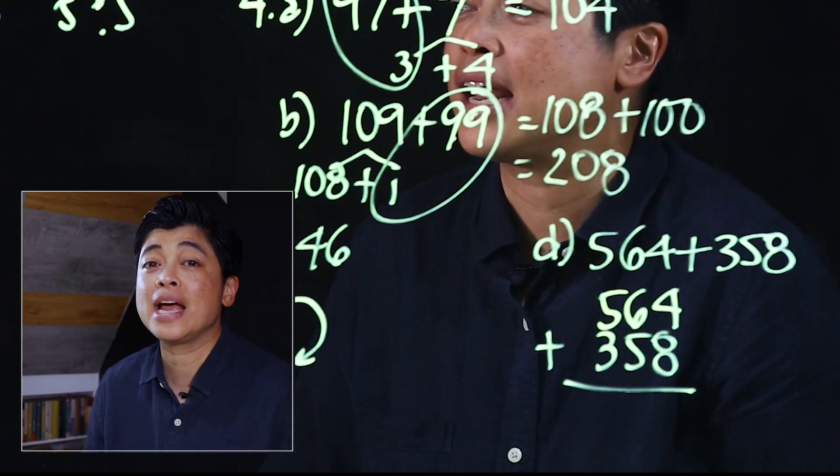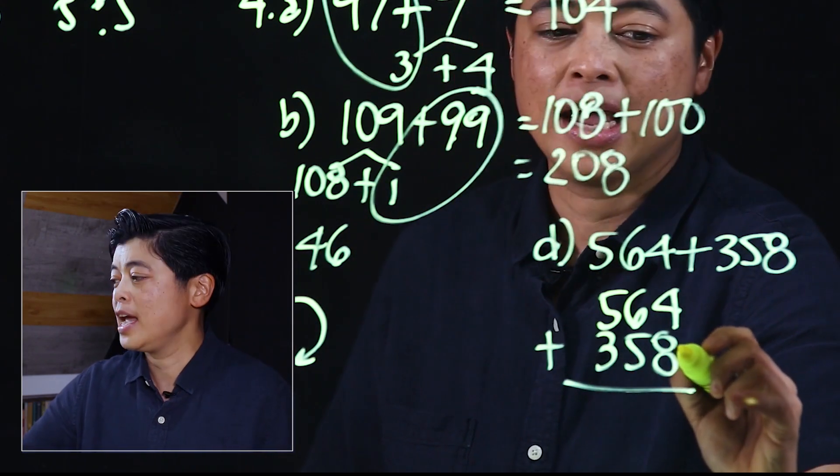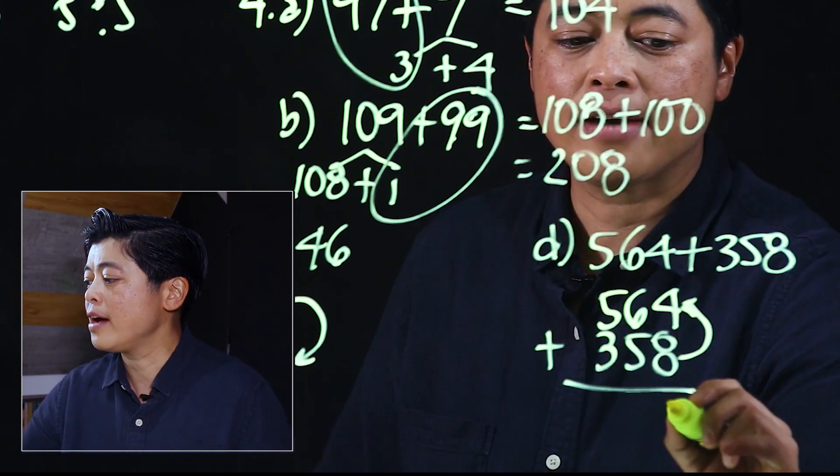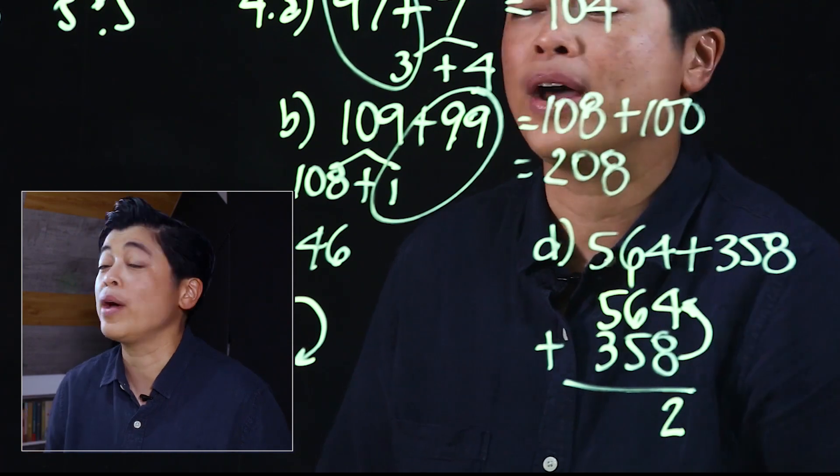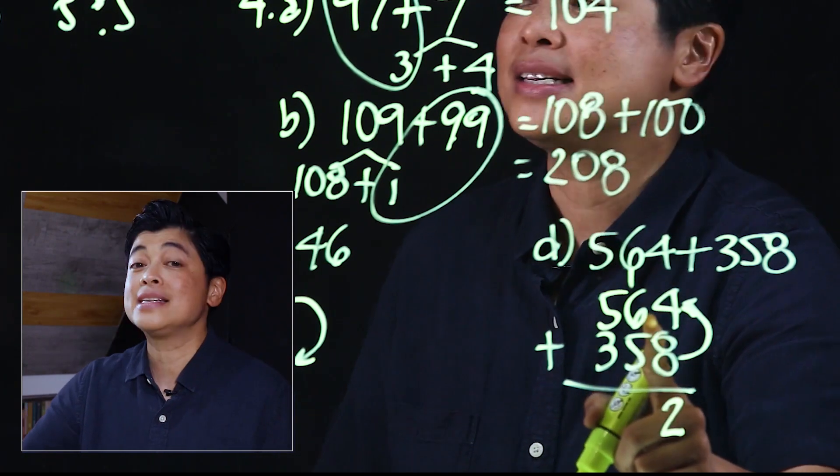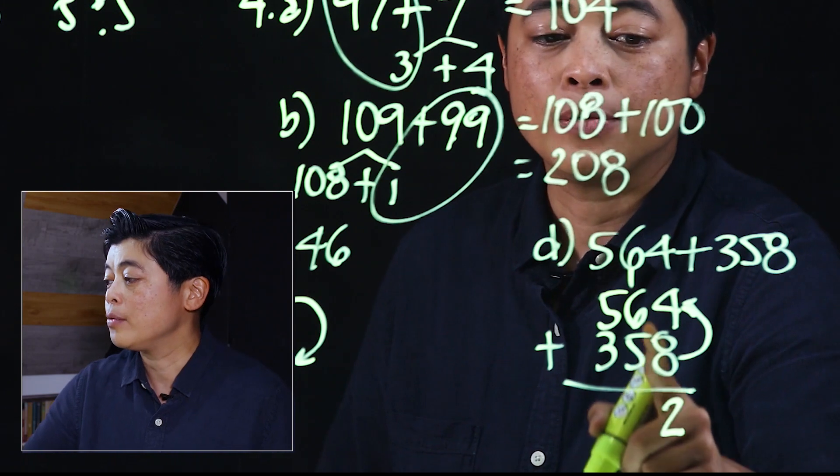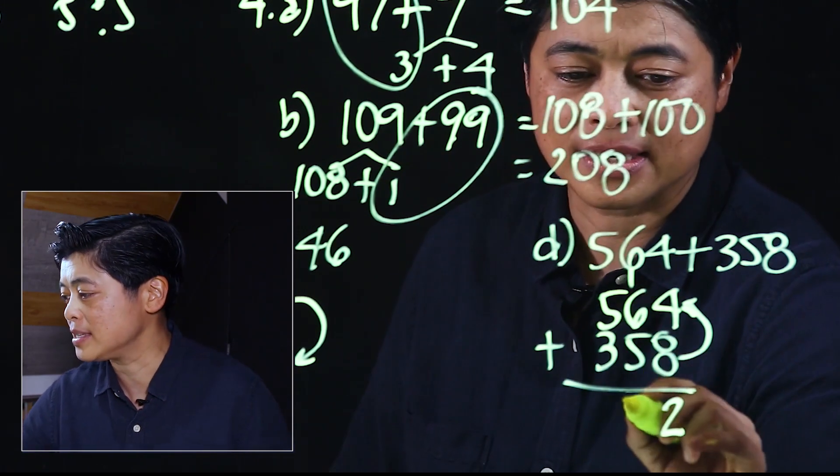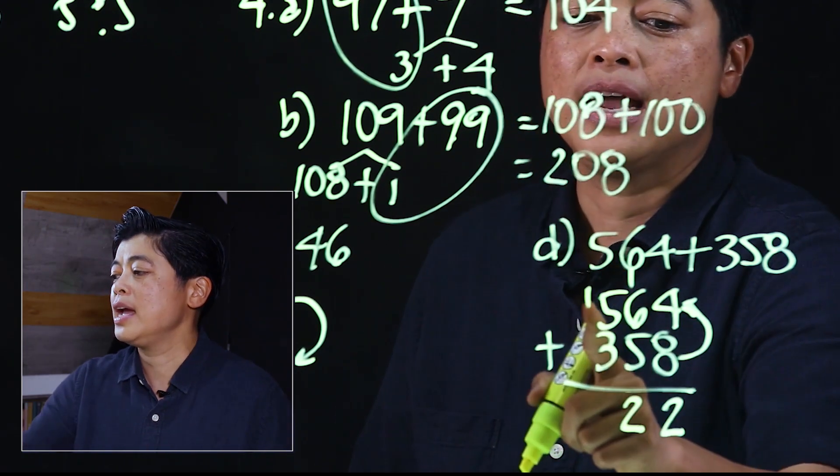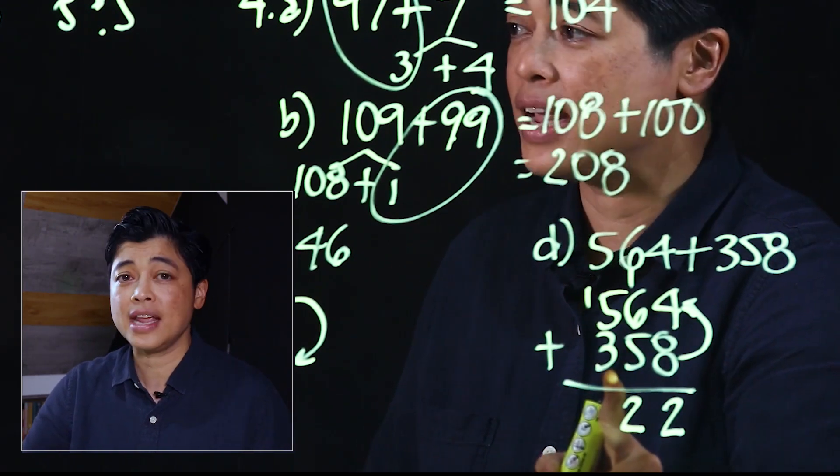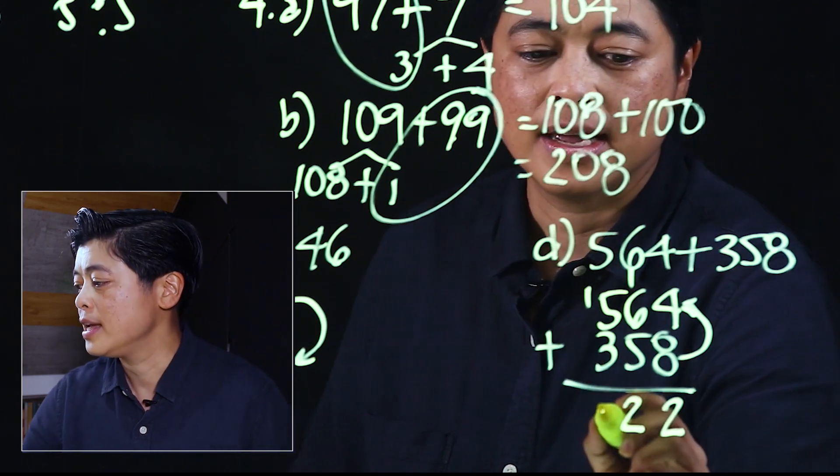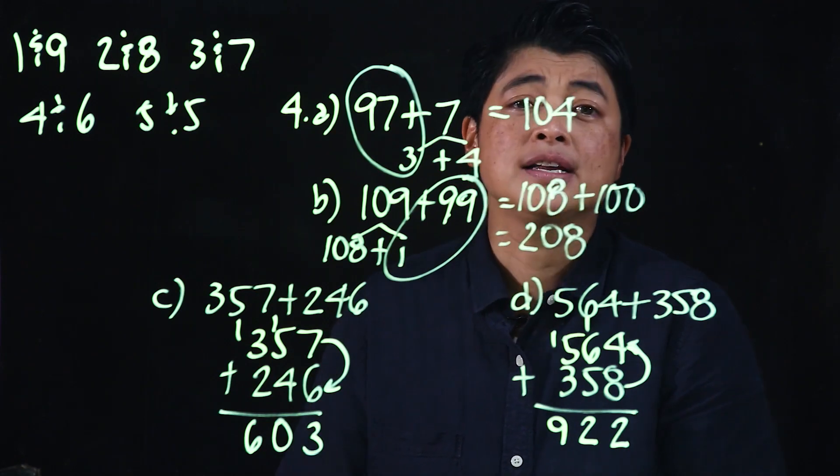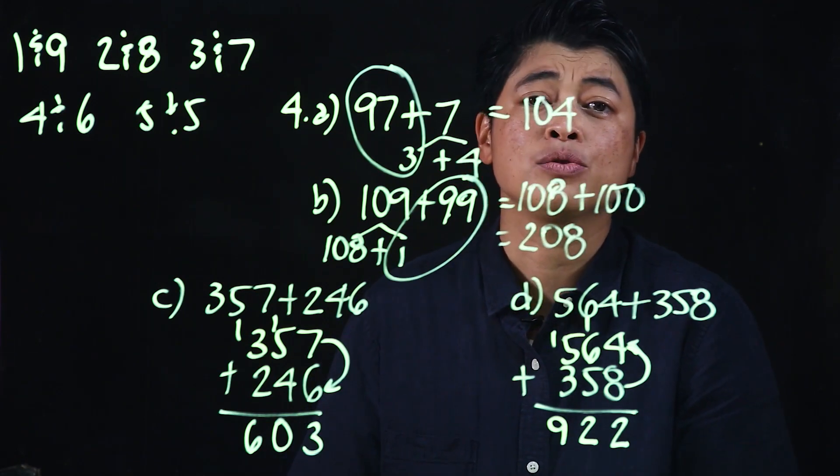Okay, this is a bit more challenging. So we take the 8 and add the 4, we need 2 to get to 10, so we have an extra 2 which makes it 12. Then we take the 6 which needs a 4, we have an extra 1 which makes it 11. 11 plus 1 makes it 12. And finally we have 5 plus 3 is 8, plus 1 is 9. So 564 plus 358 equals 922.